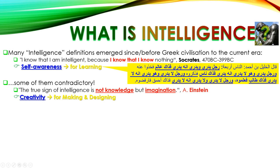The second definition of intelligence is given by Albert Einstein, which is actually a contradiction to Socrates. He said: 'The true sign of intelligence is not knowledge, but imagination.' Einstein cherished imagination more than knowledge because he believed intelligence is related to creativity — to making and designing. Without good imagination, making and designing cannot happen. So as per Einstein, intelligence is related to imagination, not knowledge, where Socrates related it to self-awareness.